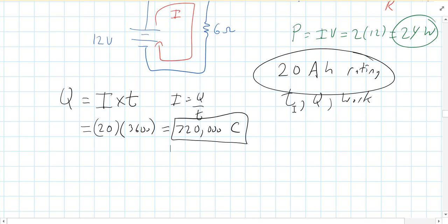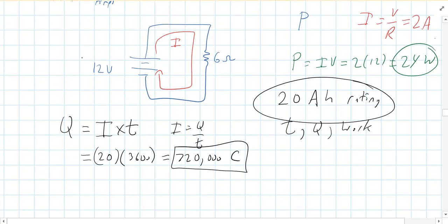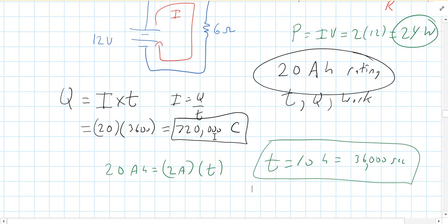Now the time that the battery will operate for, there's a couple ways to do that. One way is very simple. We are drawing 2 amps of current. The battery is rated at 20 amp hours. So if we do 20 amp hours equals 2 amps times how many hours, well the time would be 10 hours, which would also be 36,000 seconds. So that's your time that the battery will operate for before it runs out of juice.